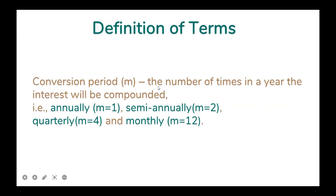The conversion period, denoted by smaller M, is the number of times in a year the interest will be compounded. For annually, M = 1. For semiannually, M = 2 — so every 6 months, two periods. For quarterly, M = 4 — a year divided into 4, or every 3 months. And monthly, M = 12 — the period is every month.